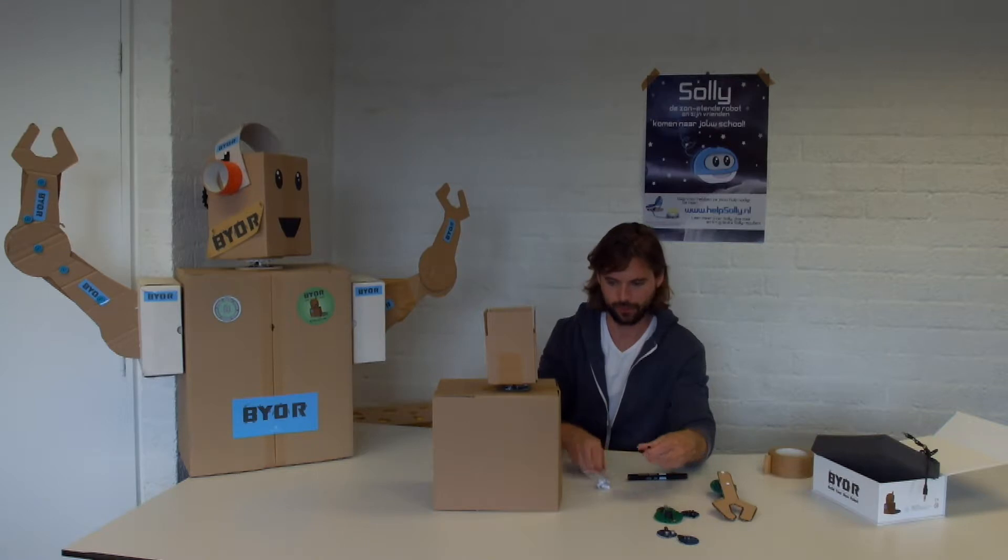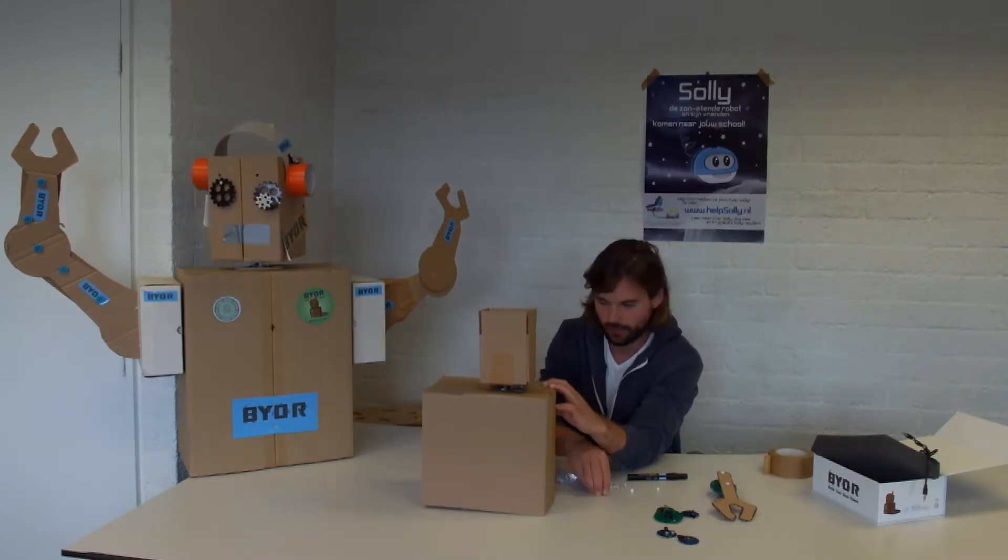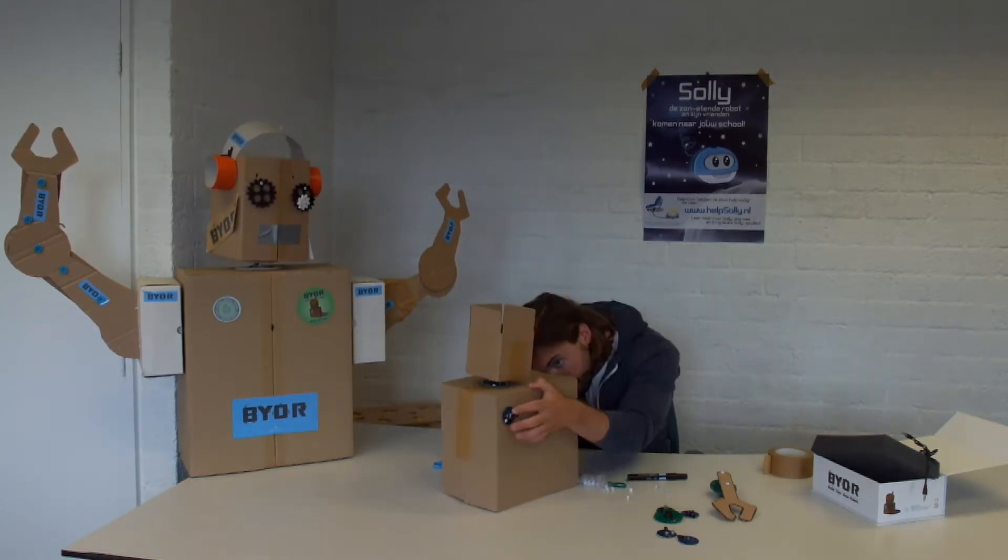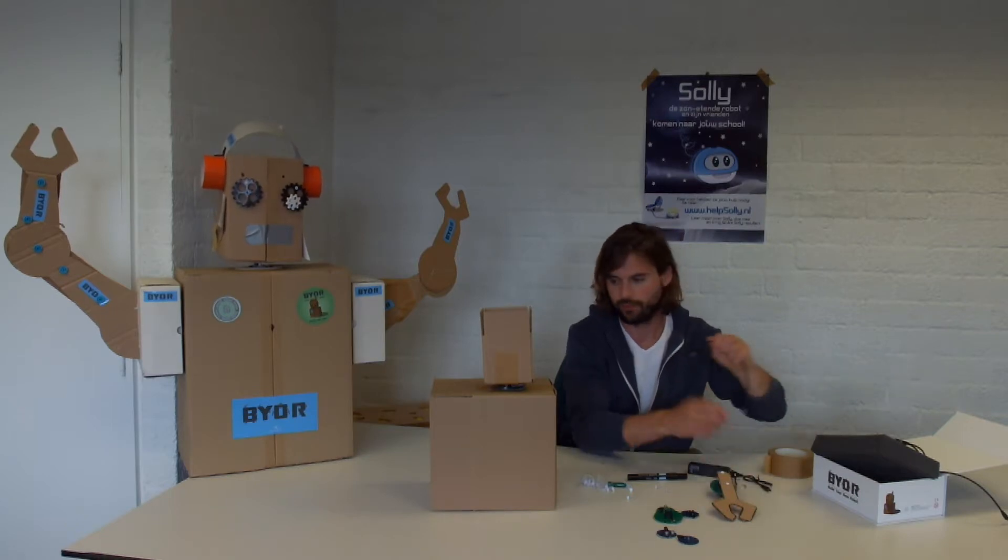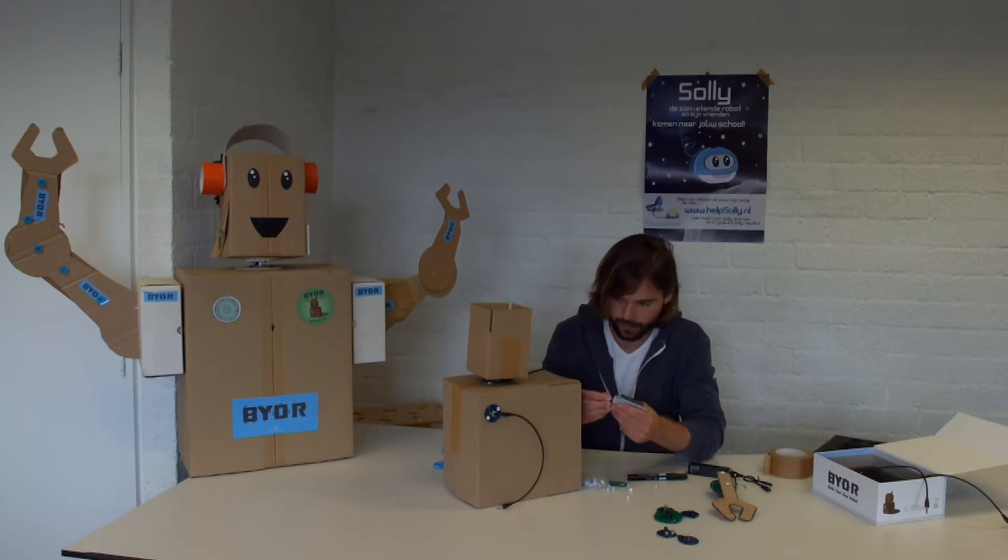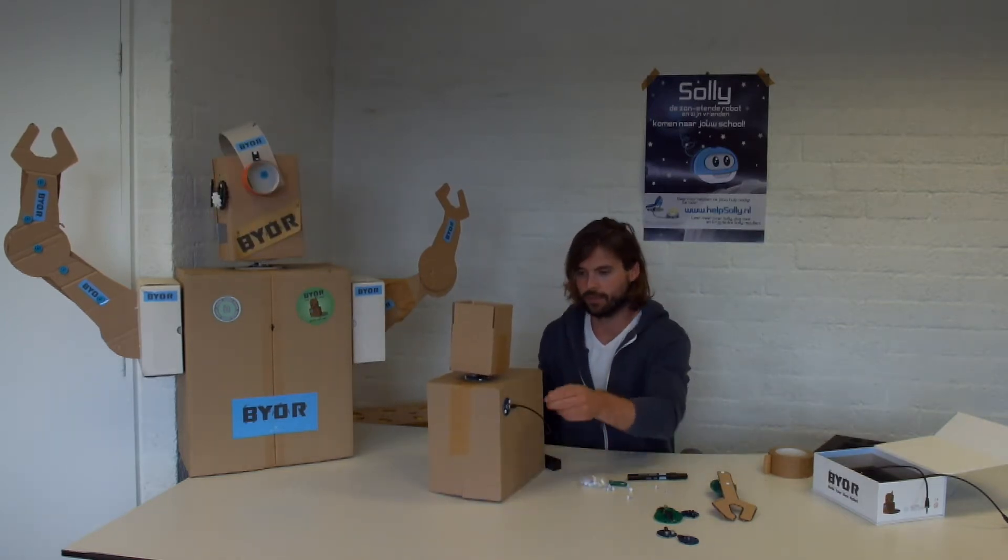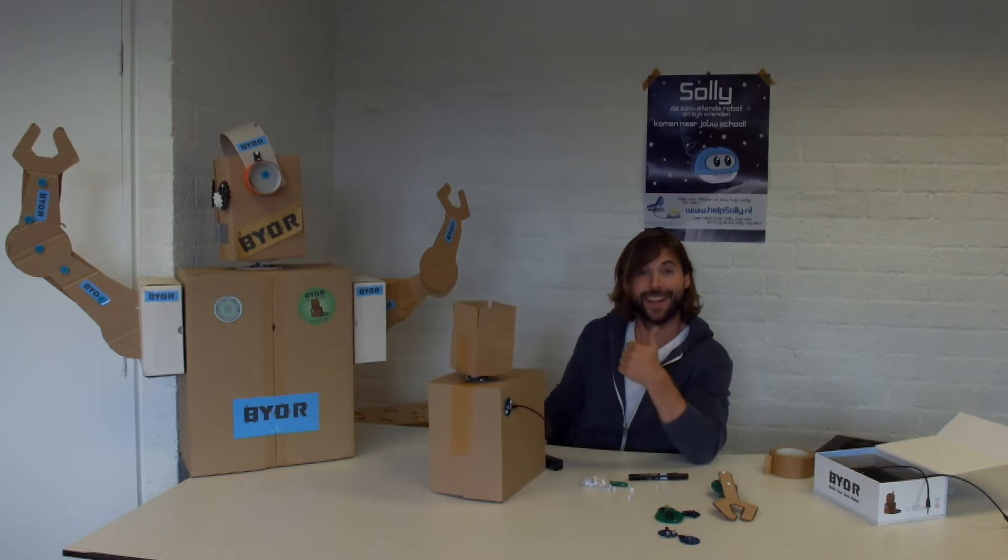The next step is to secure the turning knob on the body on the side. I'm going to use the puncture pen and the split pens again. Next we're going to use the jack cables to connect the parts to the brain as you saw earlier in this video. And there we go, the first functionality of your robot is already working. Super!